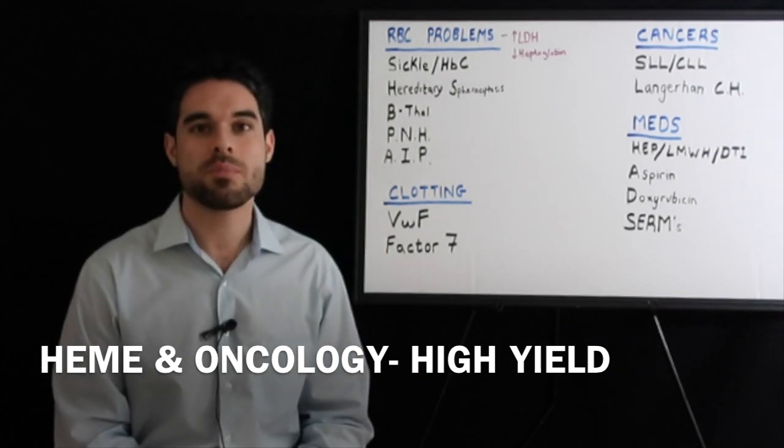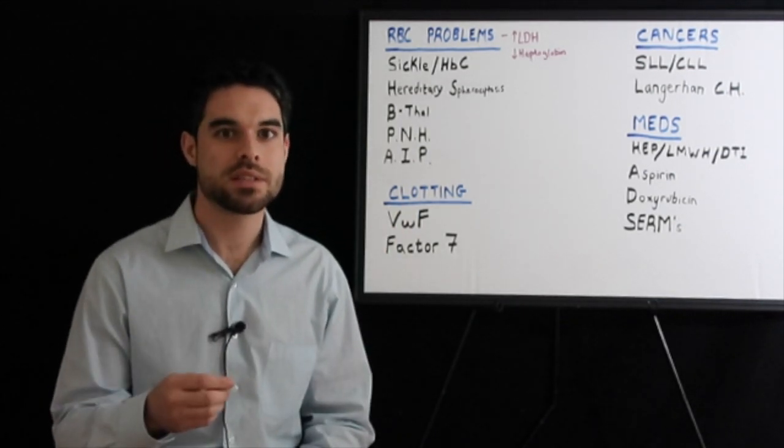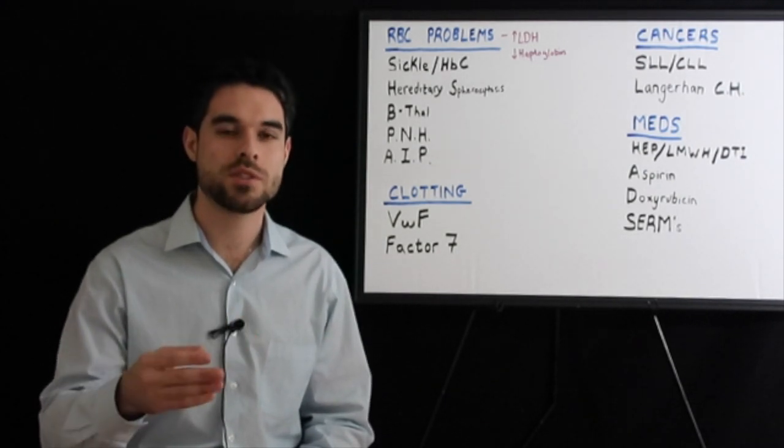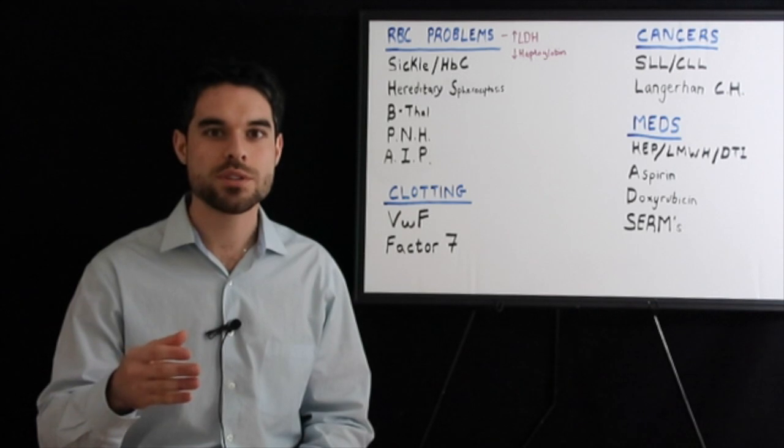We begin with sickle cell disease. The problem here is that in position six, there's a missense mutation where glutamic acid, which has a positive charge, is replaced with valine, which has no charge.